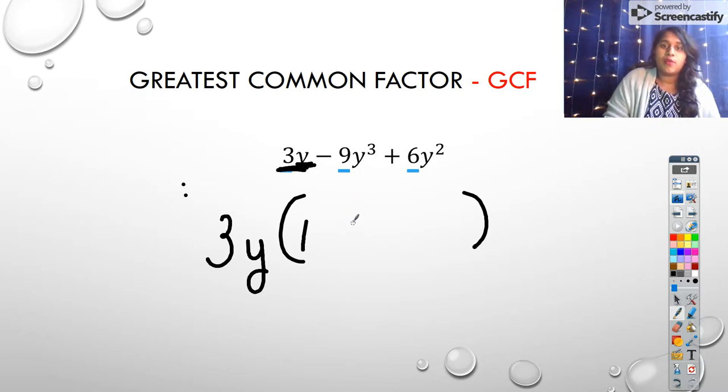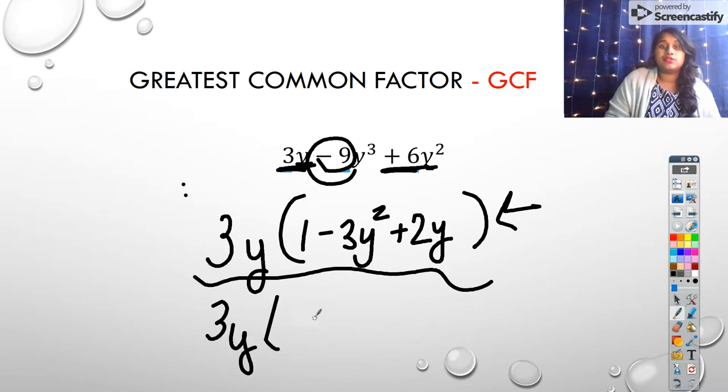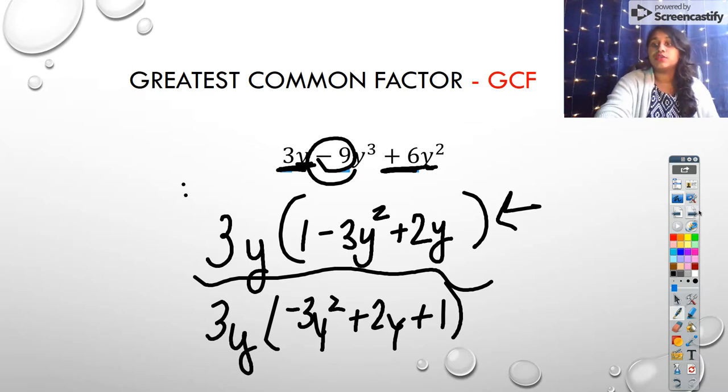What's left here? A positive y. What's left here? A positive 2. So that would be my end answer. And I could rewrite this in the way that y'all are used to seeing it: -3y² + 2y + 1. You could write it in standard form so that you can recognize it quicker.